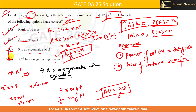Even if you didn't follow the full solution, you can guess: since it is an MSQ question, if rank of A equals n then A must be invertible, so options A and B go together. If option C were correct, A and B would not be, and option D is itself a wrong statement since A-inverse has eigenvalues 1 and 1/2, which are positive. So the correct options are A and B.